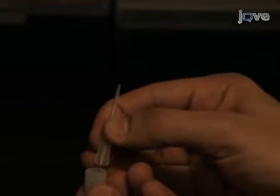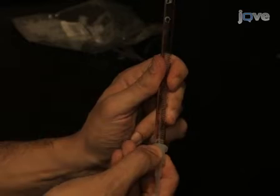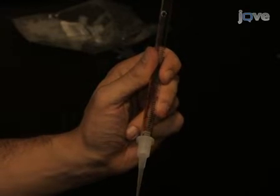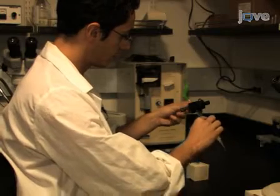Next, insert a 200 microlitre pipette tip into a barbed coupler and push the coupler into the cut end of the 10 milliliter pipette. Clamp the pipette to a magnetic stand and position it near the microscope.